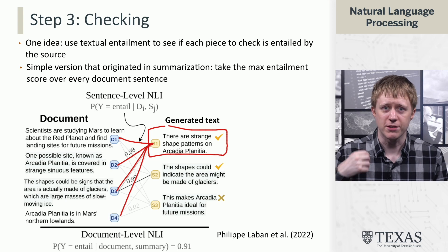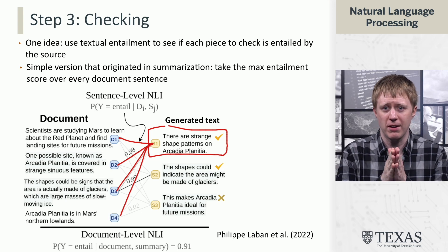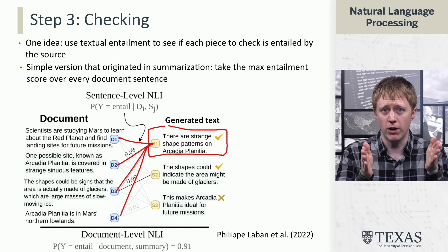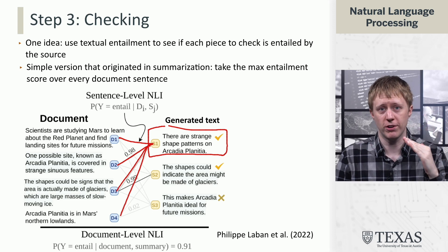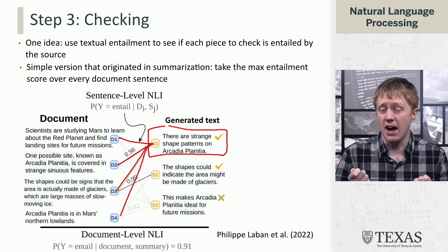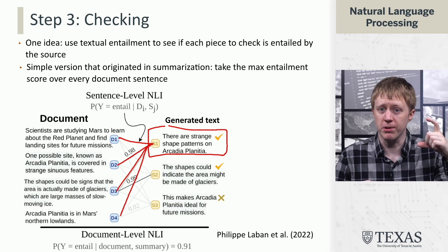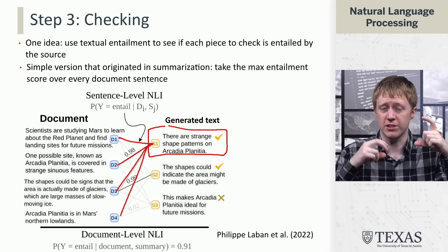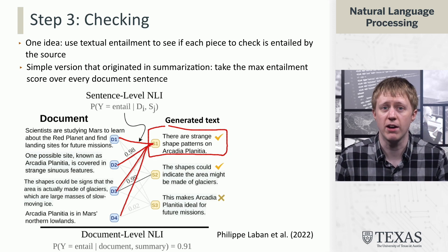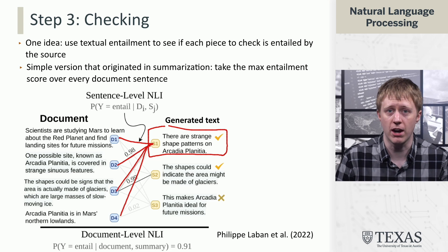This makes sense because textual entailment is about saying, does this sentence follow from the input? We're looping over sentences trying to establish that. However, it might be the case that you need multiple sentences to support what got generated, and in that case this approach would fail — you really need the document-level system.